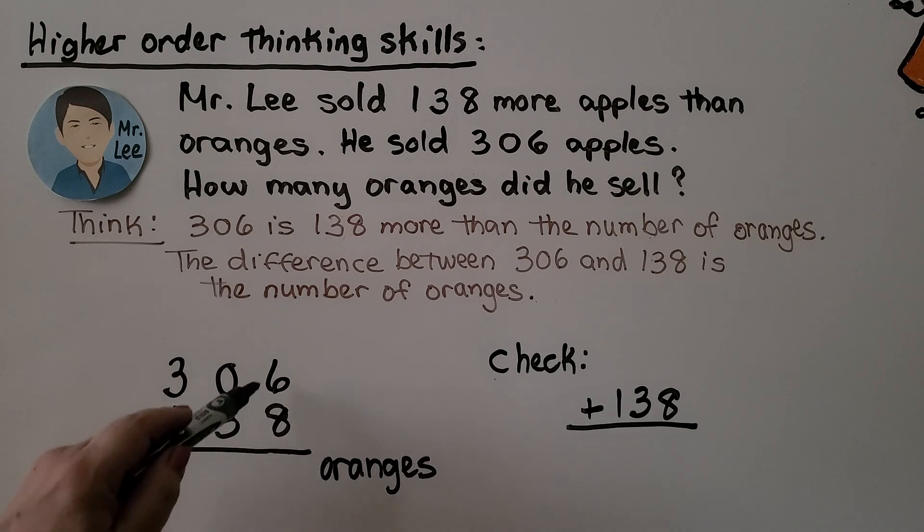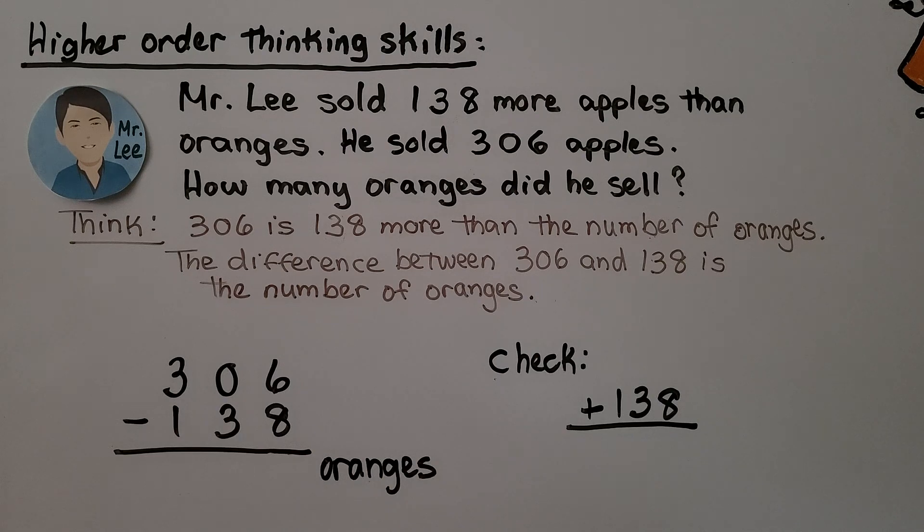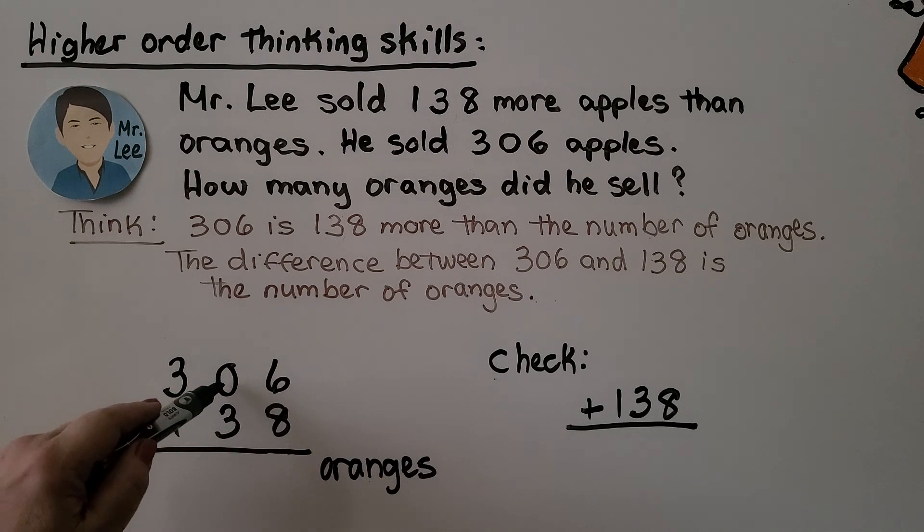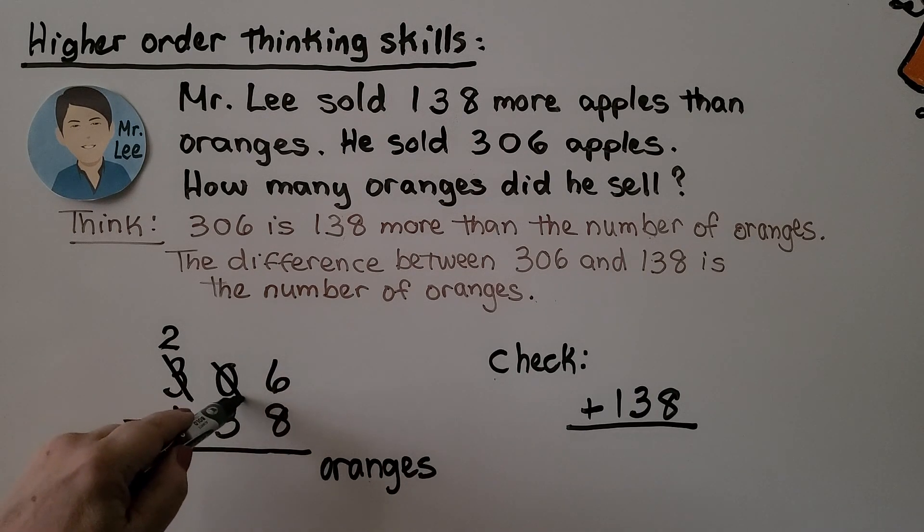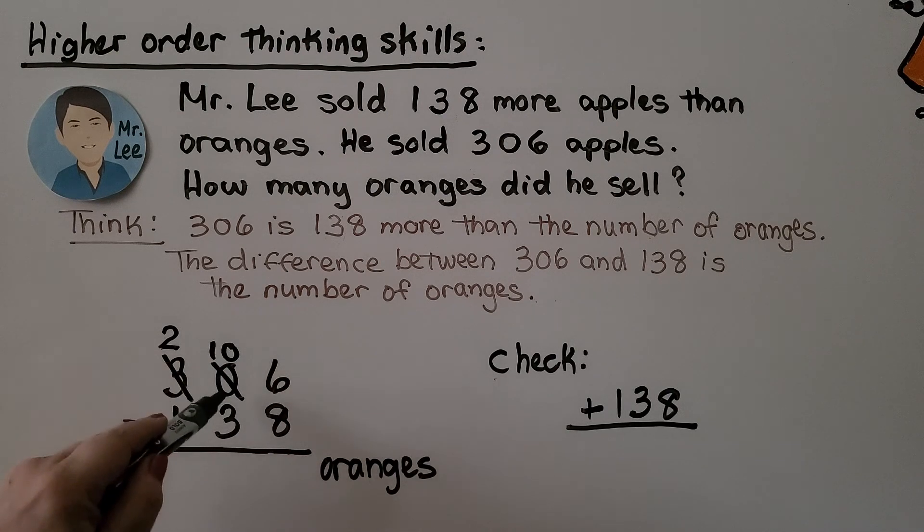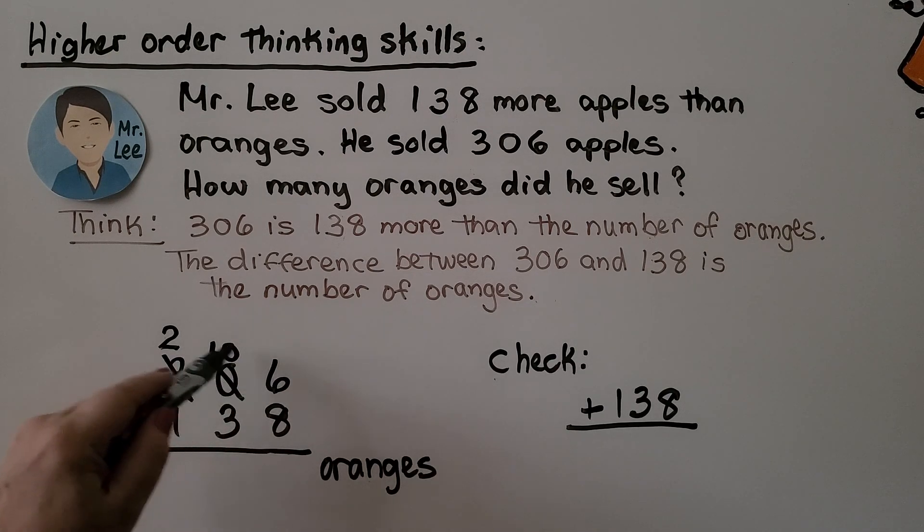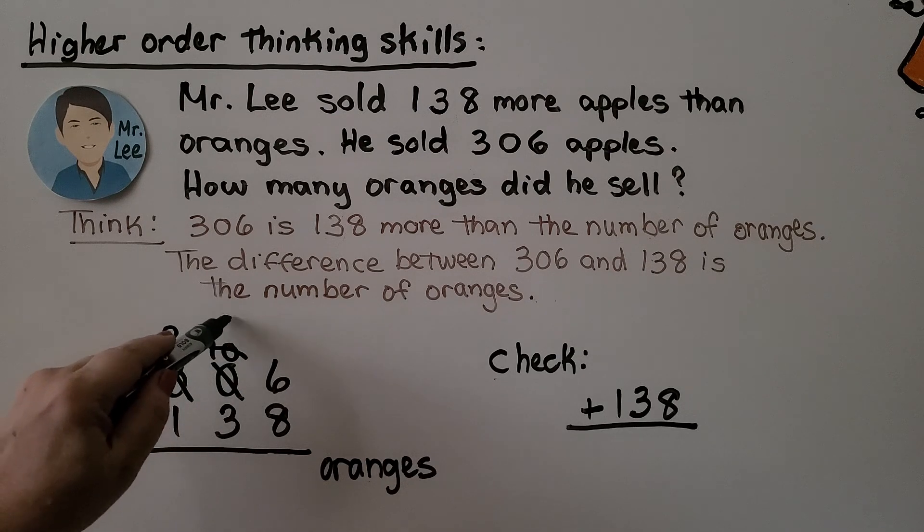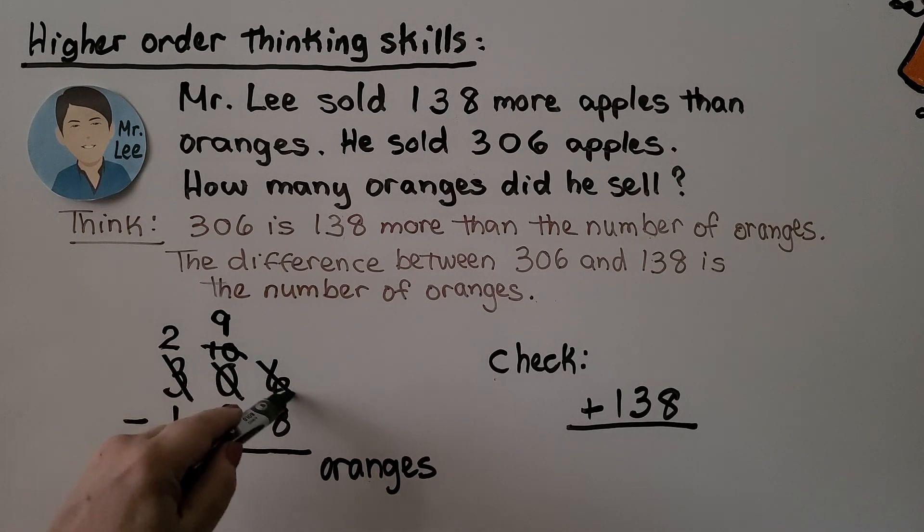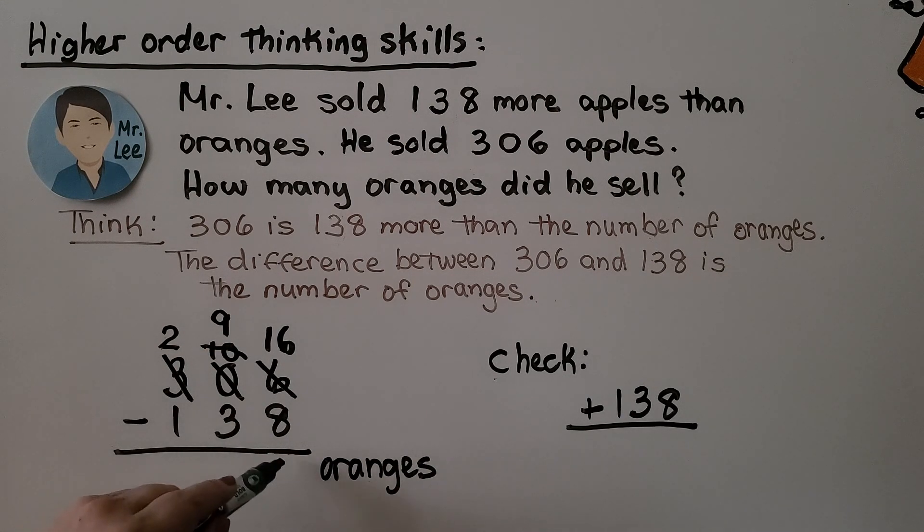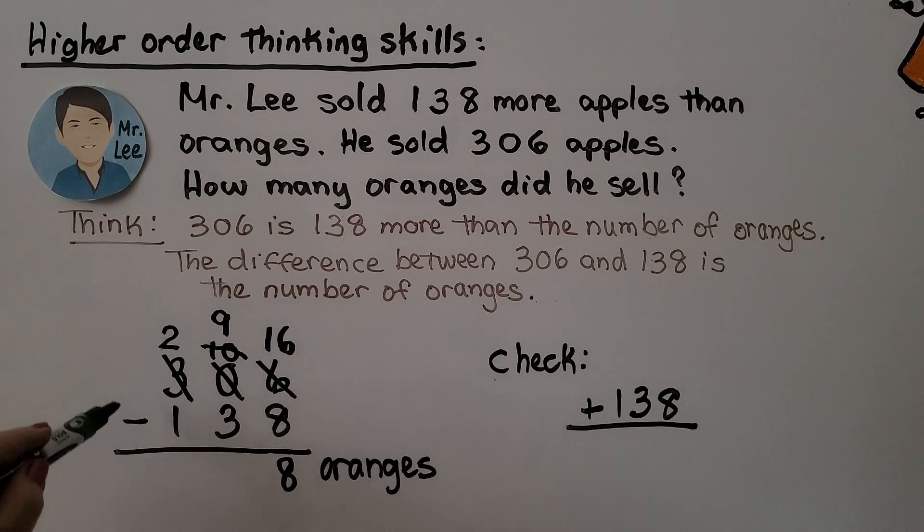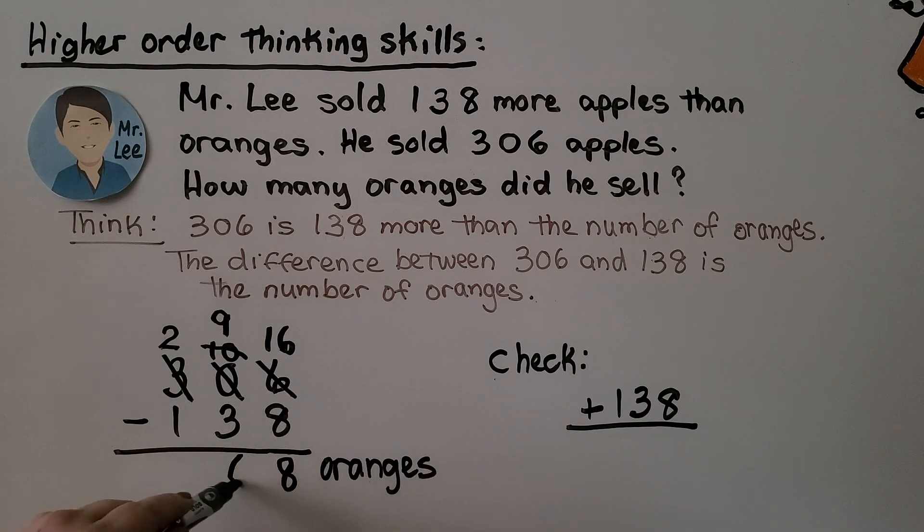We start with the ones place. We have 6 and we need to take 8 away but we don't have enough. And we can't regroup from the tens place because that's a zero. So we're going to regroup from the hundreds and make 300 into 200. We're going to make 0 tens into 10 tens. Then we're going to help the ones out by turning this into 9 tens and giving 10 ones to the ones place. Now instead of 6 ones we have 16 ones. And 16 minus 8 is 8.